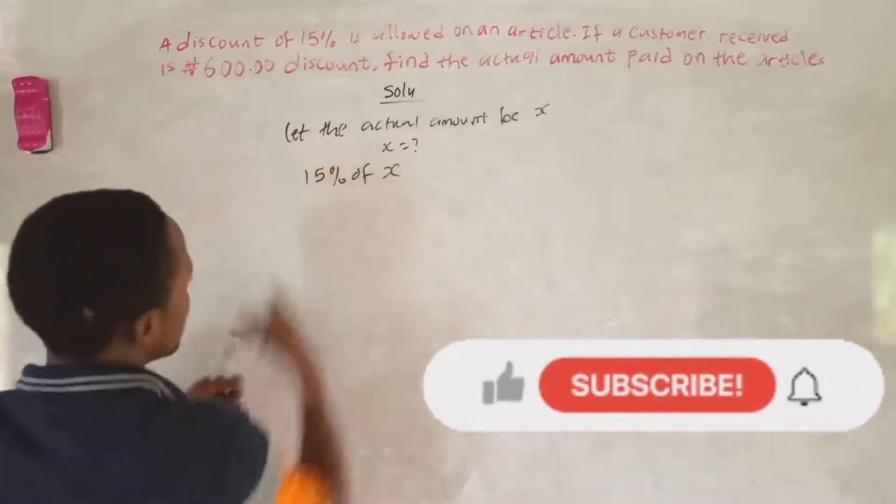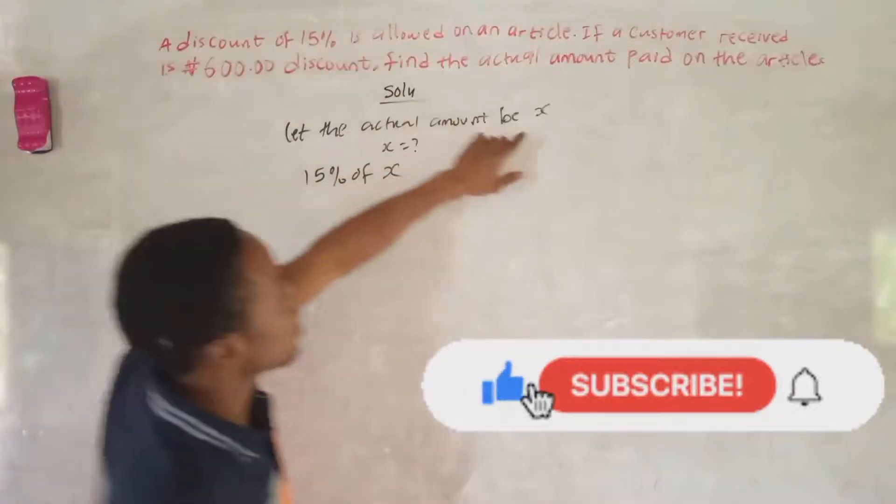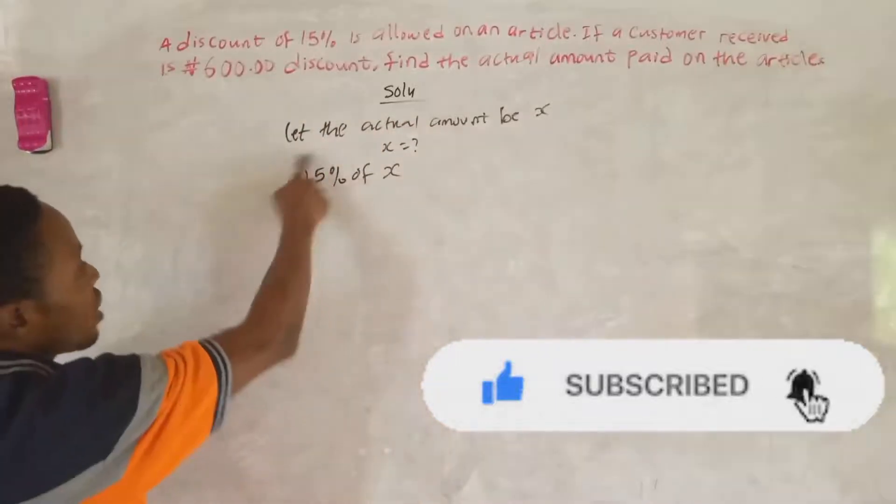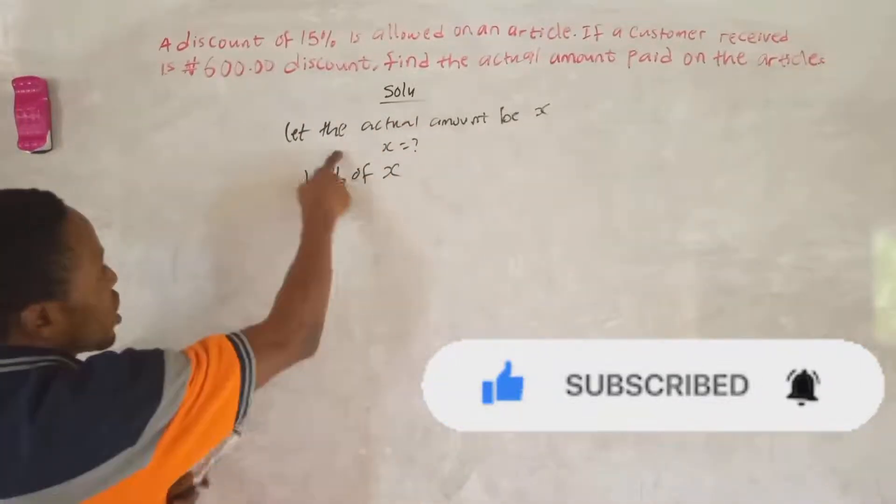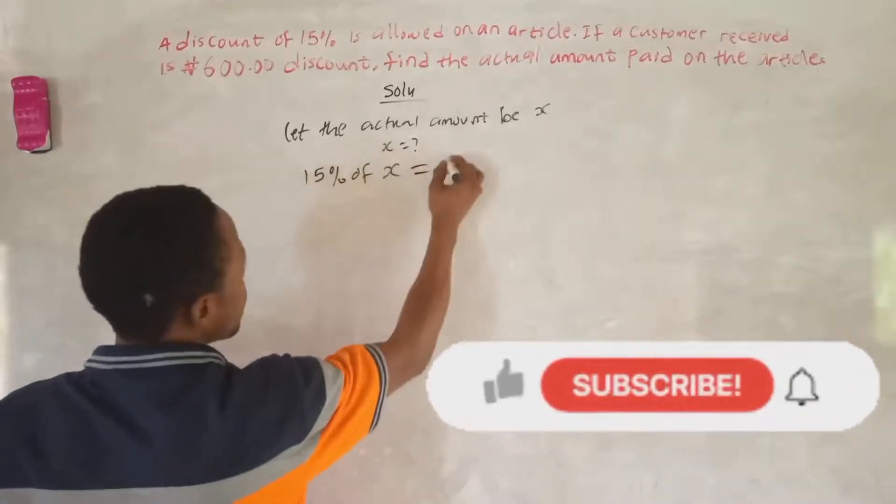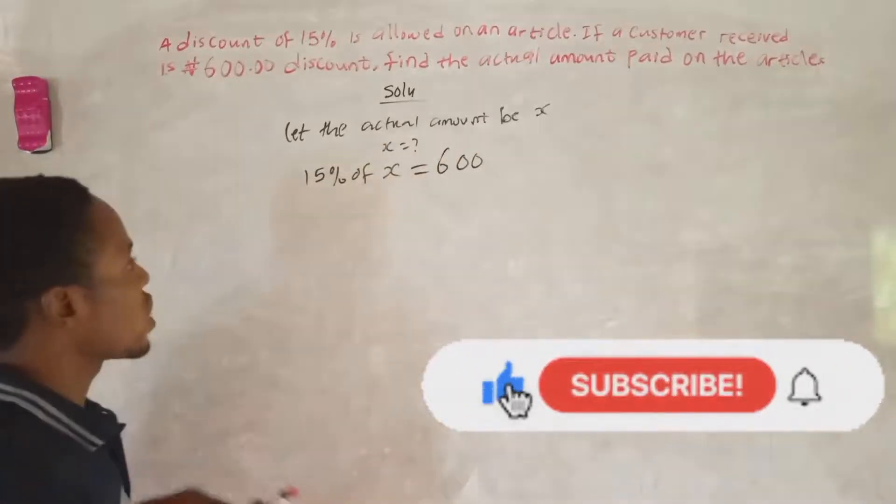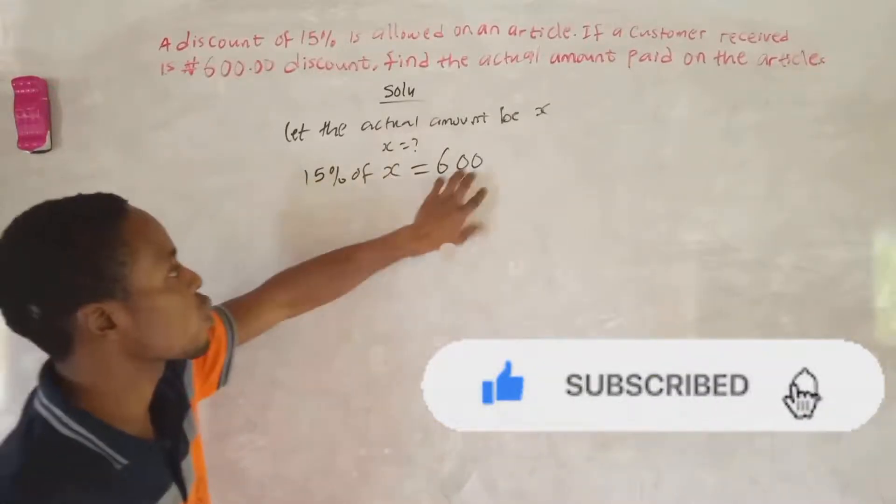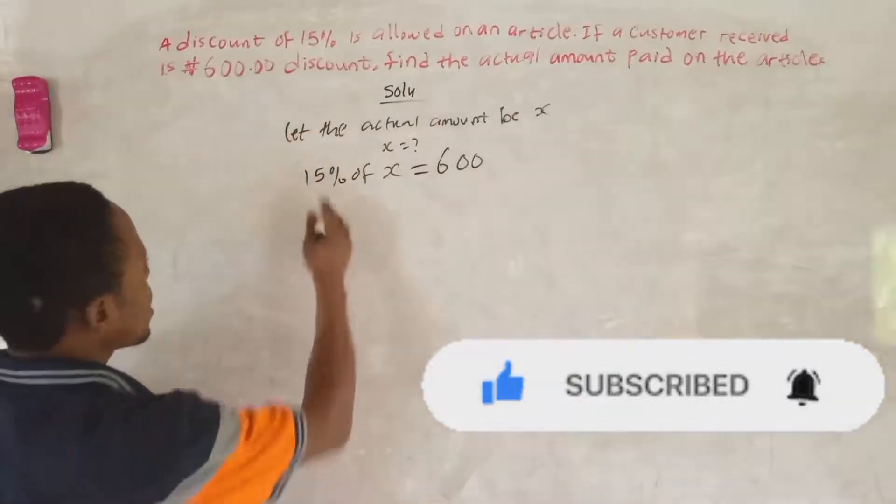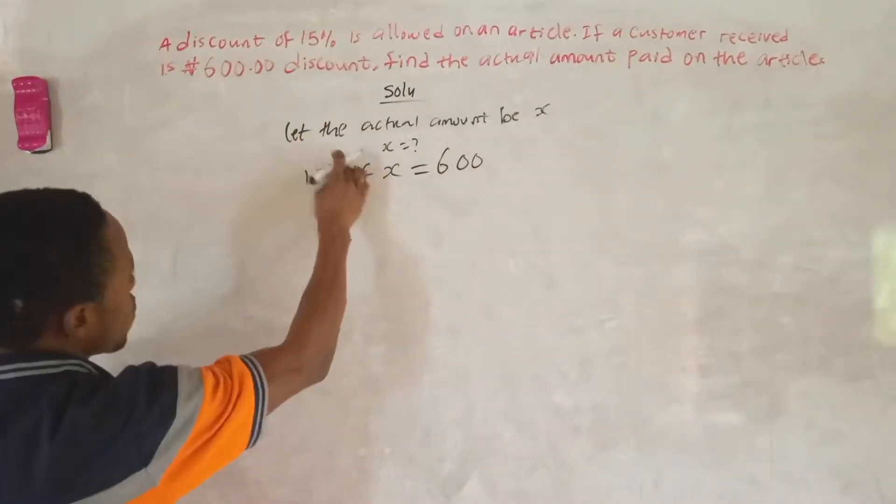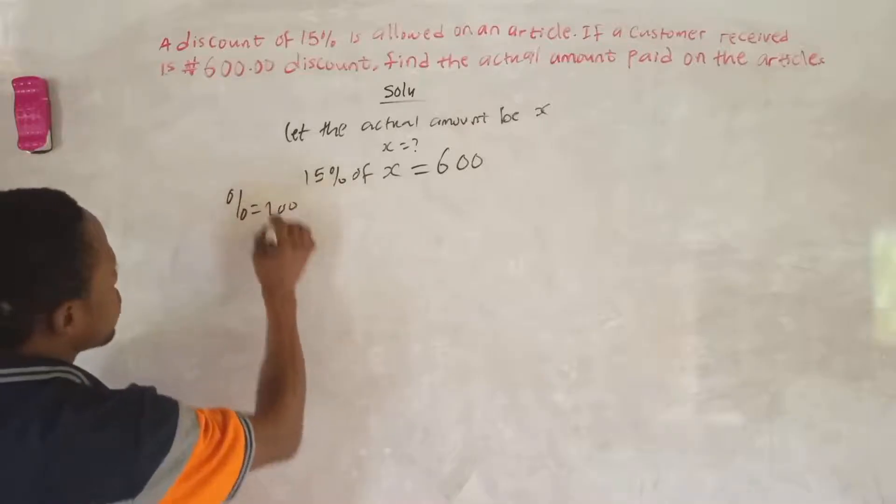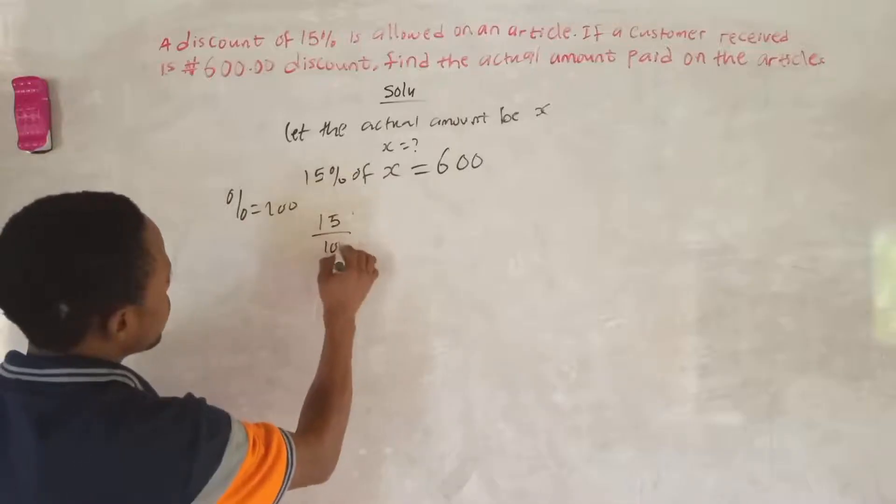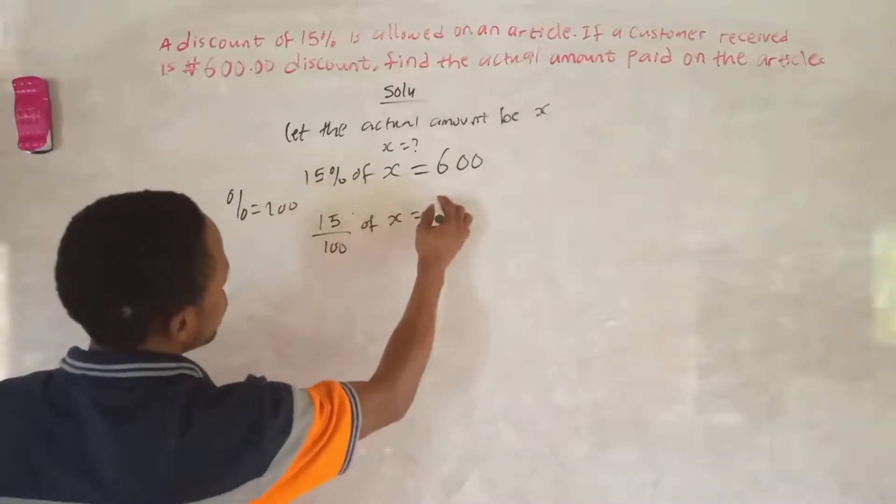So they say that this percentage of the actual amount multiplied by the actual amount equals 600. So 15% means 15 over 100. So let's say 15 over 100 of S is equal to 600.